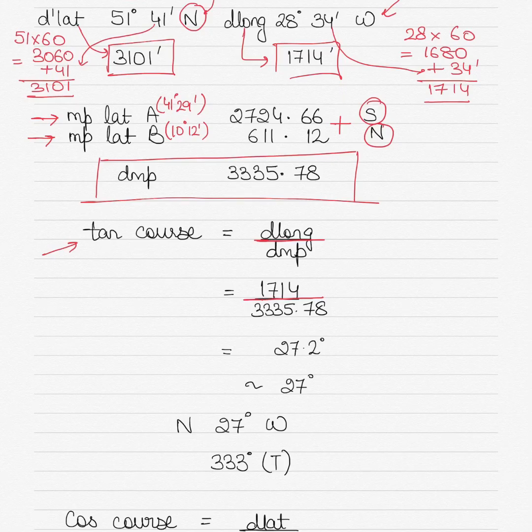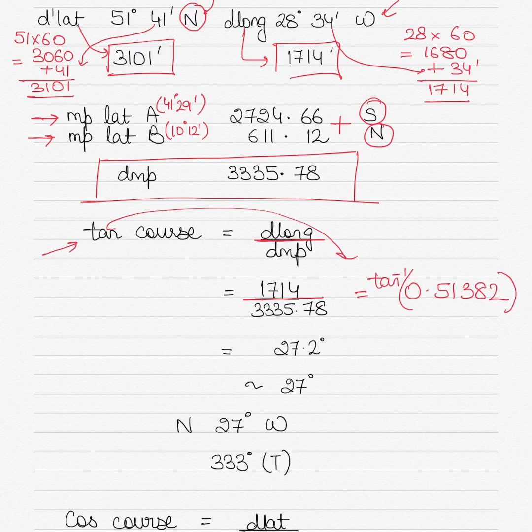What you get is 1714 divided by 3335.78. You should be getting somewhere around 0.51382. I'm sticking to five decimal places. Take tan to the other side, becomes tan inverse of this value. Put a tan inverse value in the calculator, so if you press shift and tan, it will be tan inverse. And the answer that you will be getting is 27.2. Now, what happens with courses is that you should not have it in decimals, because ideally you cannot steer courses in decimals, maybe a 0.5, but not 0.4, 0.3, 0.2, or 0.7, 0.6, 0.8.